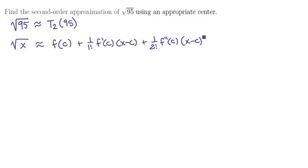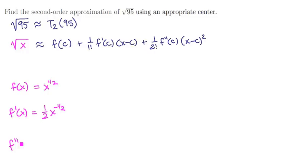We need to figure out what center to use, but first let's take those derivatives. Our function is f of x equals the square root of x, or x to the one half. Its first derivative is one half times x to the minus one half, and its second derivative is negative one fourth times x to the minus three halves.